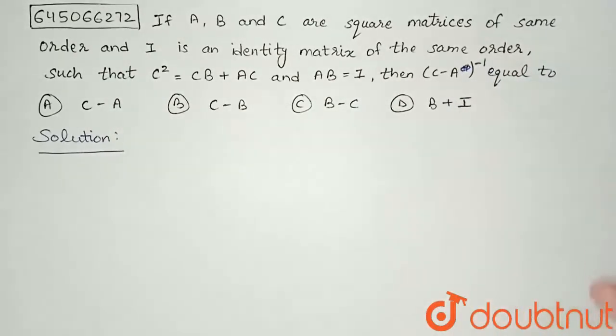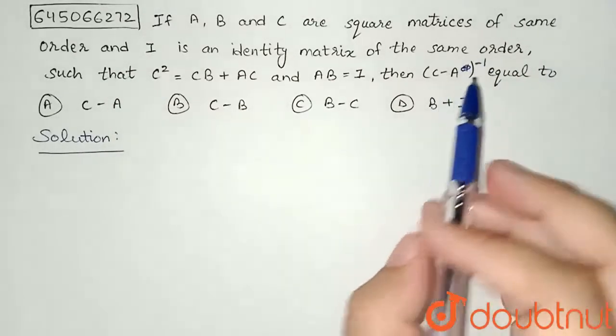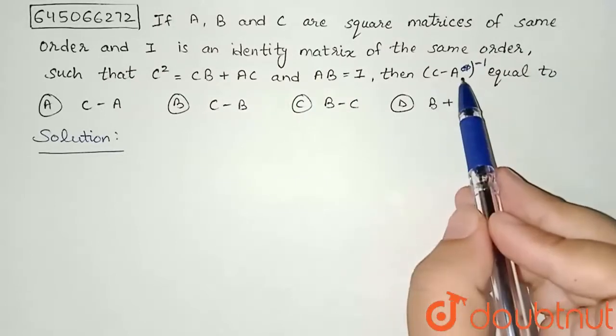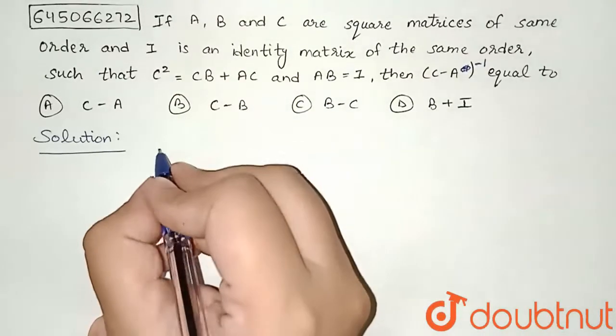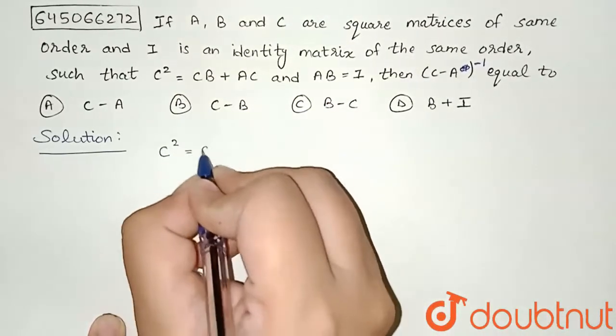In this question we are asked to find the inverse of C minus A, and we are given these two conditions. So first of all, let us consider that C² = CB + AC.